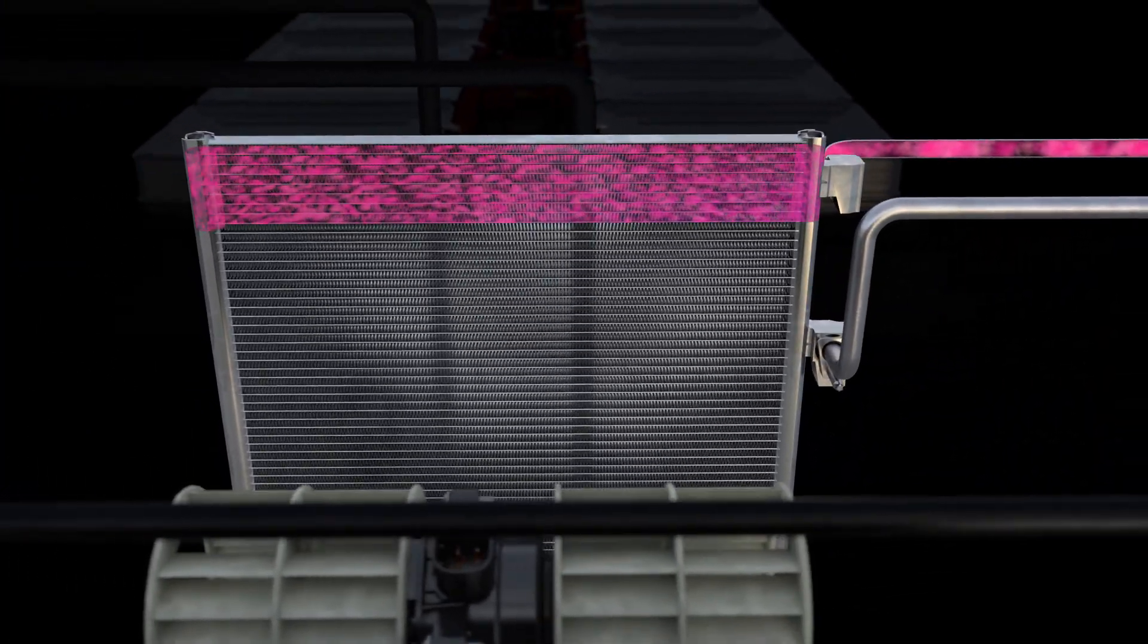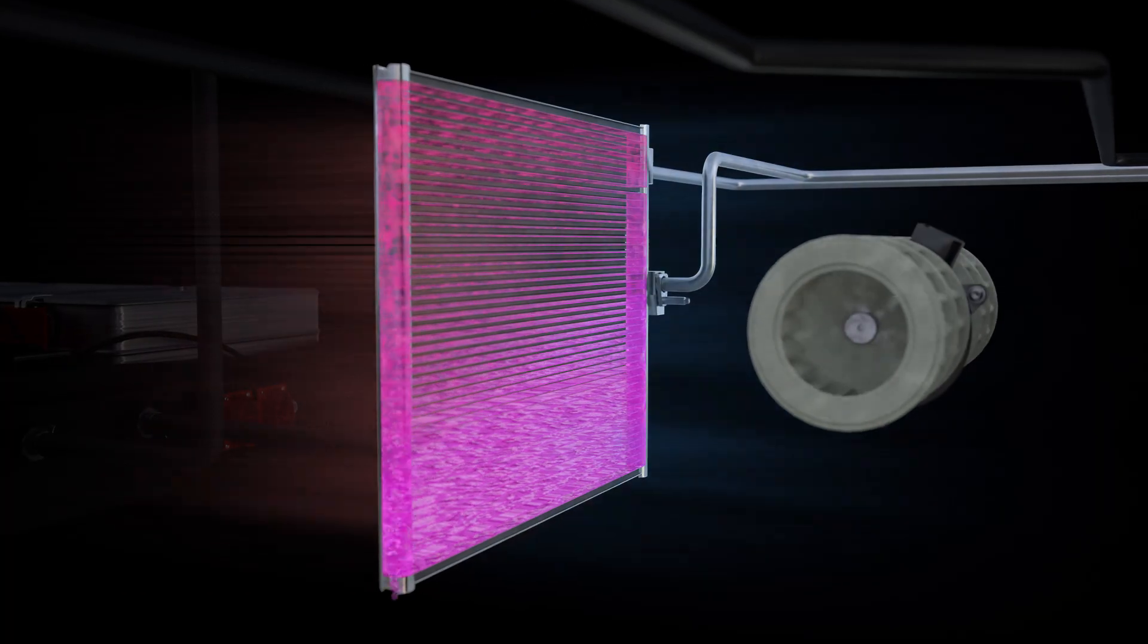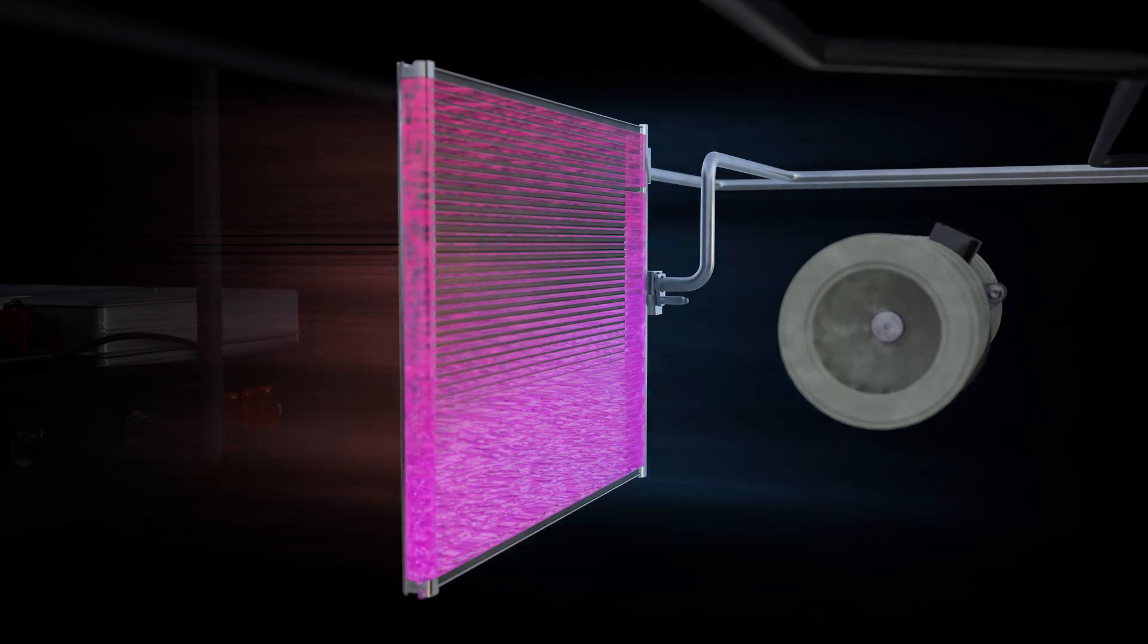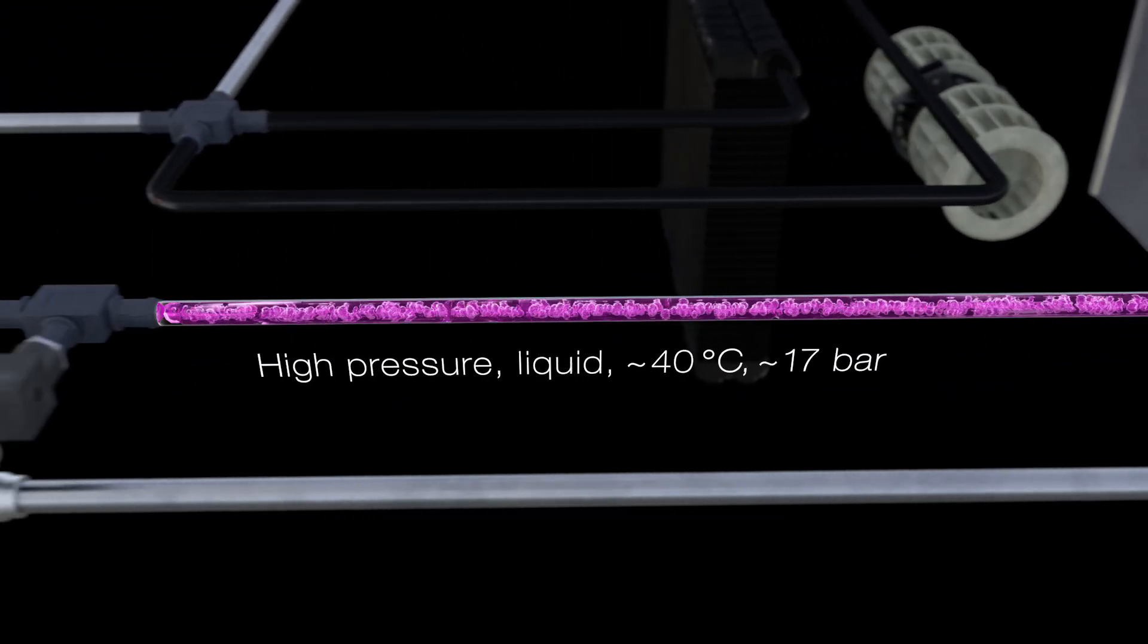In the condenser, it becomes liquid, releasing heat into the environment. The blower then transports this warm air back into the cabin, resulting in a comfortable temperature. The refrigerant is now directed to the heat exchanger at the front.